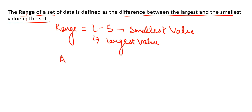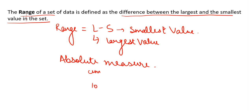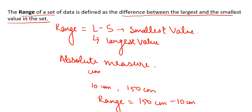Range is basically an absolute measure. If our data is in centimeters — for example, measuring the length of a rope — and the smallest value is 10 centimeters and the largest value is 150 centimeters, then the range is 150 minus 10, which is 140 centimeters. We can see that the result contains the unit of measure, centimeters. So range is an absolute measure.